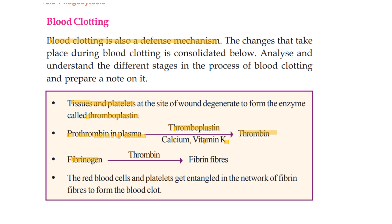In the presence of thrombin, fibrinogen forms fibrin fibers. Red blood cells and platelets get entangled in the network of fibrin fibers to form a blood clot. Blood clotting is thus a defense mechanism.